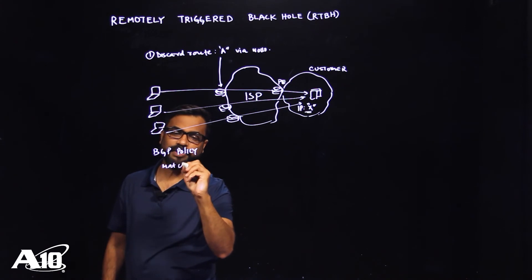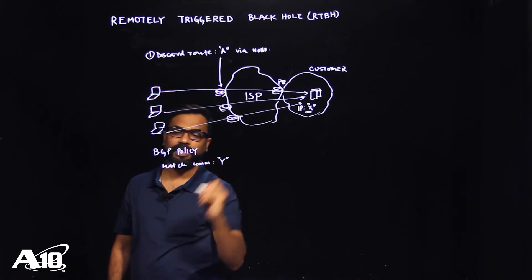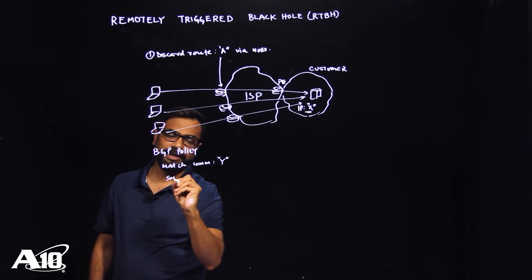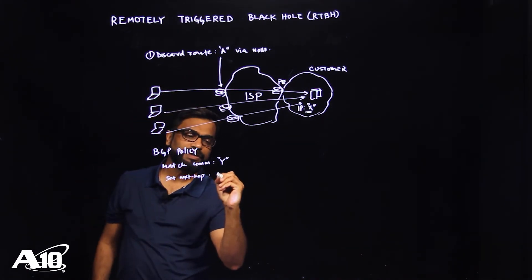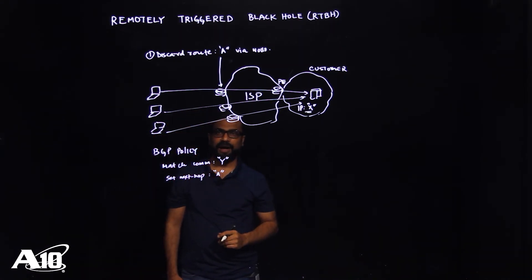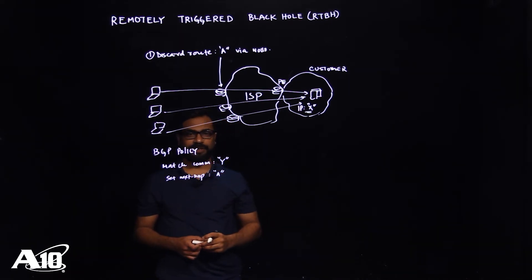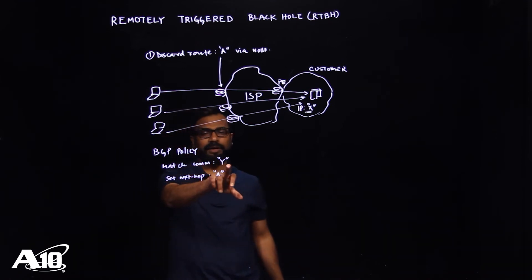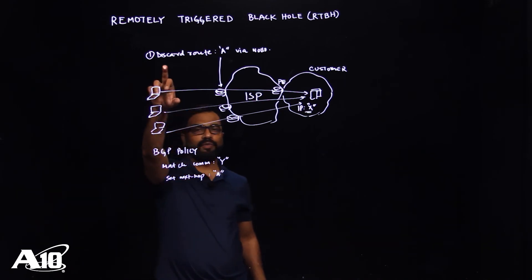So this is how it's going to look like. We're going to match on a community. For example, let's say this community being Y. And we are just asking it to change your next hop to the IP address that we have used in the discard route. Now, we have this thing pre-configured. What's going to happen now is whenever an update is received with a community of Y, the match is going to happen and we're going to change the next hop pointing towards the null route.